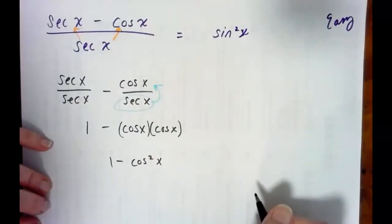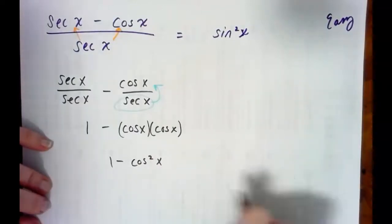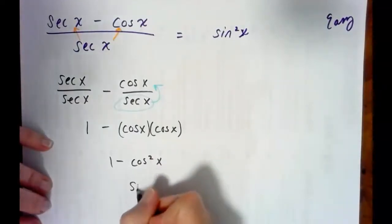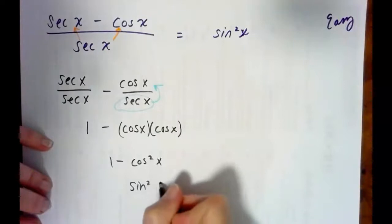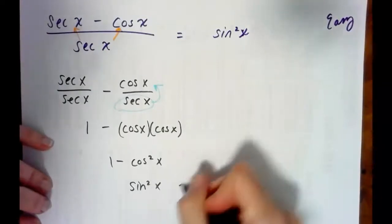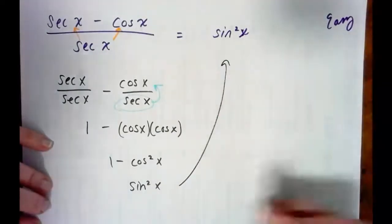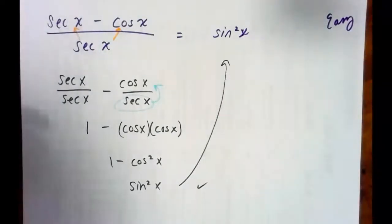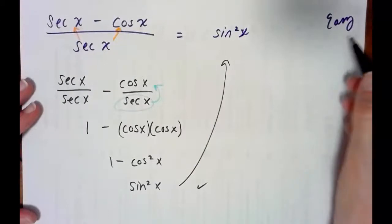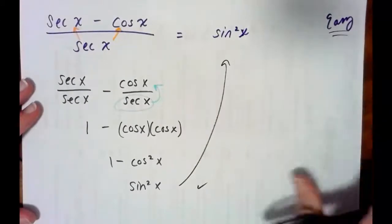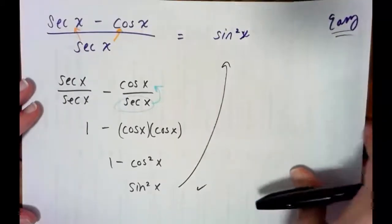And 1 minus cosine squared is sine squared, which is our right side — so it is verified. That is a pretty easy one.